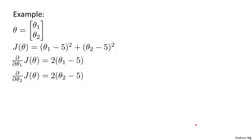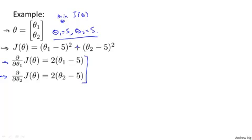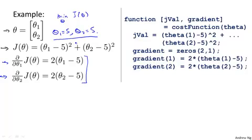Now let's explain how to use these algorithms with an example. Let's say you have a problem with two parameters theta, where theta equals theta 0 and theta 1. Let's say your cost function is J of theta equals (theta 1 minus 5) squared plus (theta 2 minus 5) squared. With this cost function, the value that minimizes J of theta is going to be theta 1 equals 5, theta 2 equals 5. The derivatives of the cost function J turn out to be these two expressions. So if you want to apply one of the advanced optimization algorithms to minimize this cost function — if we didn't know the minimum was at (5, 5) but wanted to find it numerically, using something more advanced than gradient descent — what you would do is implement an Octave function like this.